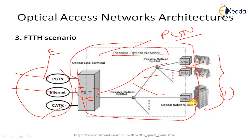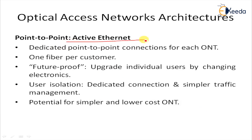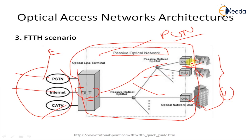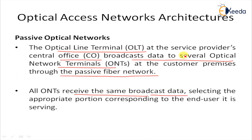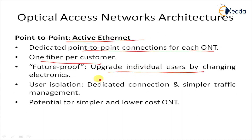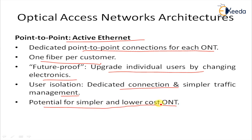All ONUs receive the same broadcast data and select the appropriate portion corresponding to each end user. For large business users requiring end-to-end dedicated connections, point-to-point Active Ethernet is used — one fiber per customer. This achieves much higher speed compared to copper or twisted pair connections. Dedicated connections provide simpler traffic management, and point-to-point Ethernet services offer simpler and lower-cost ONU devices.